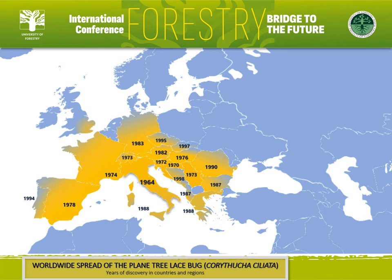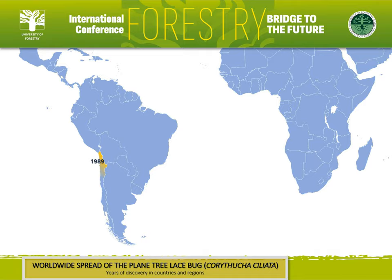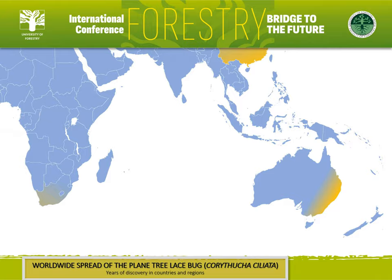In North Macedonia, although the first published record is for 2011, there is anecdotal evidence for widespread presence throughout the country as early as the late 1970s. This insect has spread on 5 continents and is considered a cosmopolitan species.